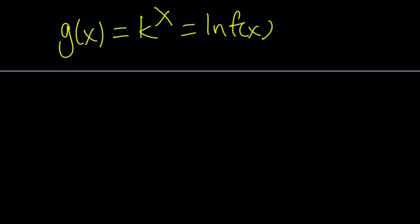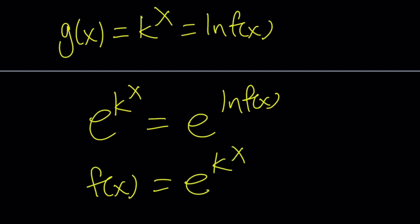e to the power k to the power x equals e to the power ln f of x. And now, from here, f of x is going to be e to the power k to the power x. Now, guess what?